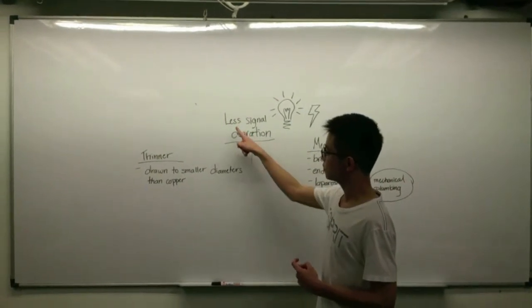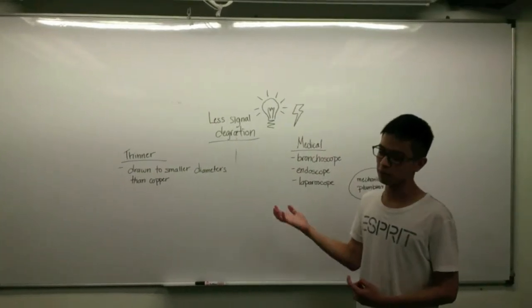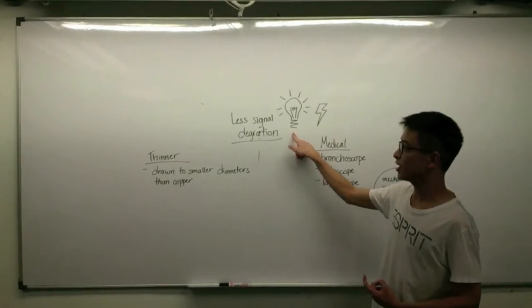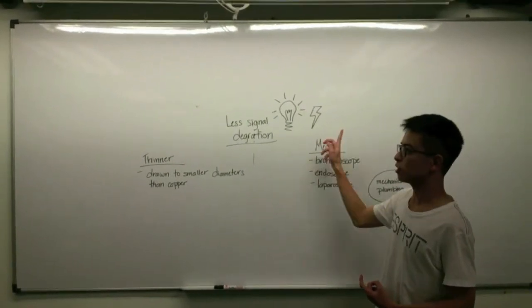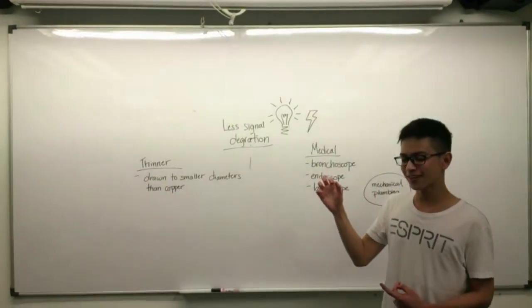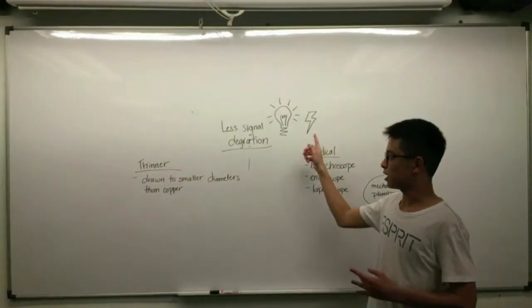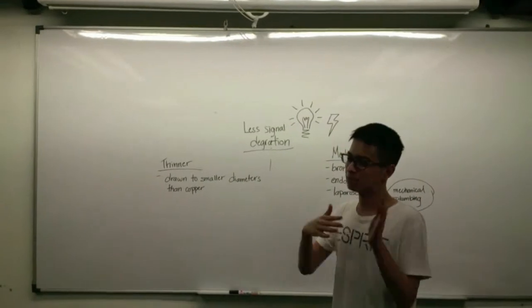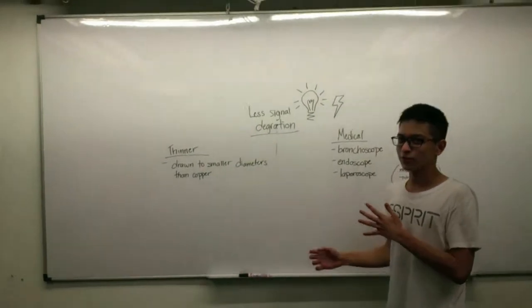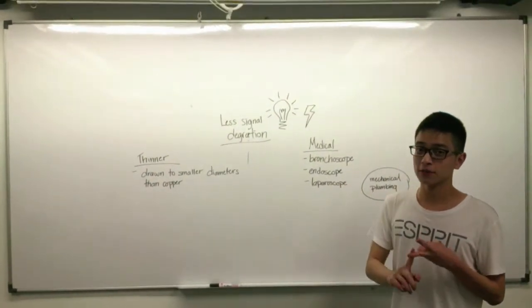And finally, the final point is that there is less signal degradation compared to your standard copper wire. This is because it uses light. It transfers information through light compared to copper which uses electric current. Light does not interfere between the fibers, unlike the current. And therefore, it brings image close to another point in a more clear manner. And that's why you get better reception for your phones and like clearer images for your TV and your sounds.